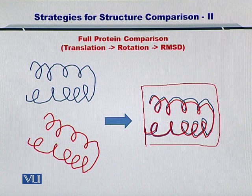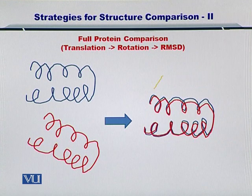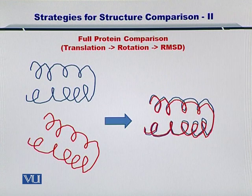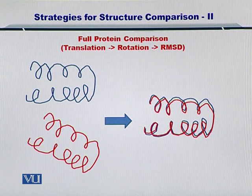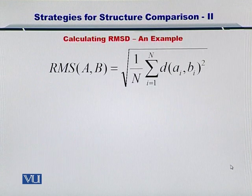Once you have done that, you can look at the distance between the two proteins by looking at their corresponding alpha carbons positioned in their backbone. The important point to note here is that you may want to have certain transformations done on the proteins involved in the comparison before you actually calculate the RMSD. So let's see how do you calculate the RMSD?